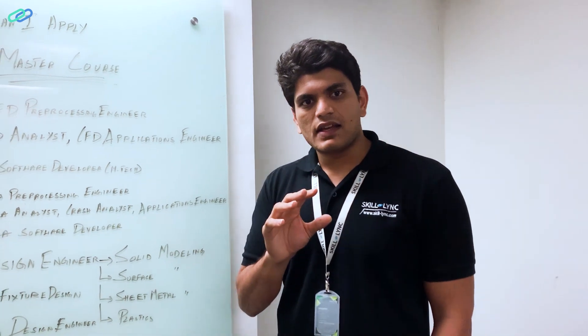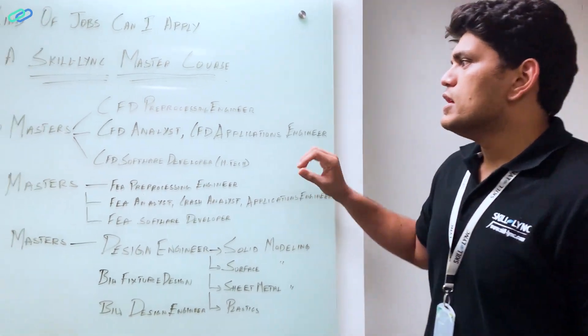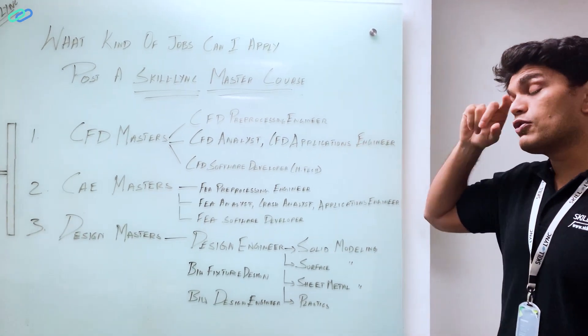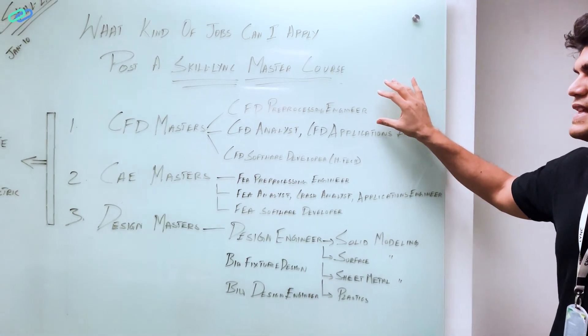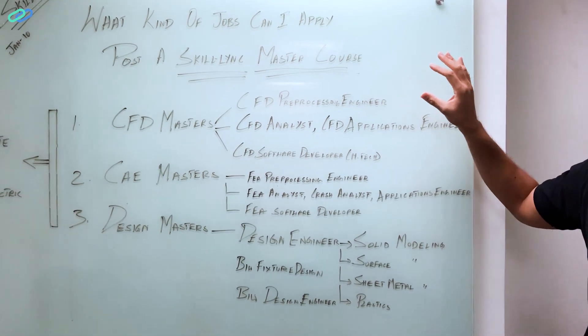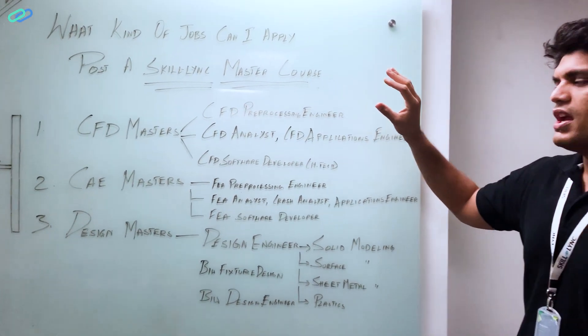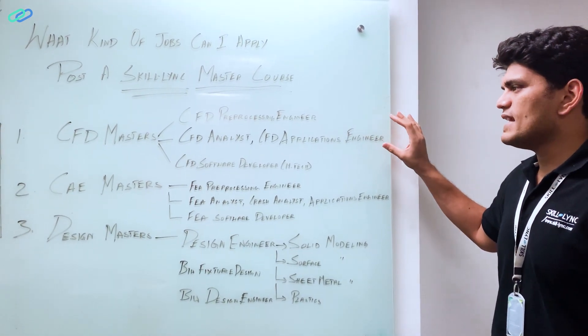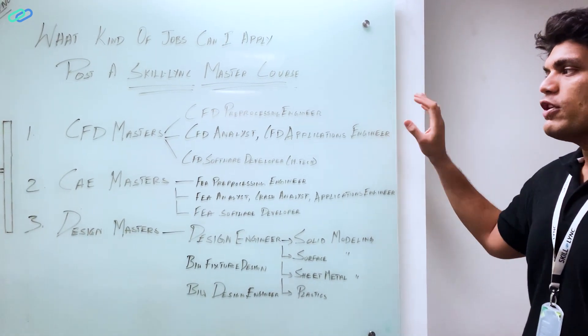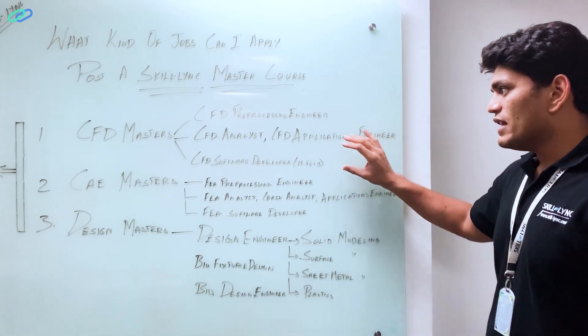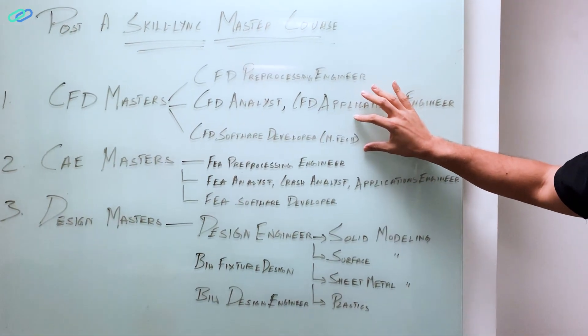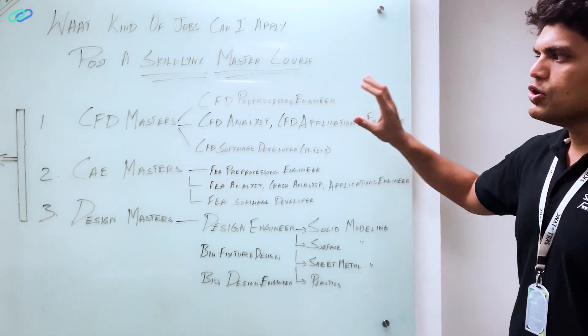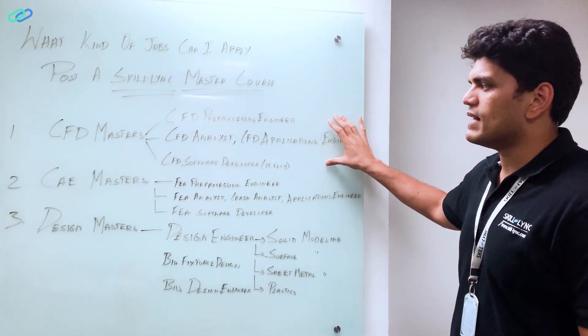So now what kind of jobs do students get after finishing our course? If you take any master course with computational fluid dynamics, if you are good at tools like ANSA or HYPERMESH, you can get into a CFD pre-processing engineer role. So here what you will do is basically work on meshing and setting up boundary conditions. If you are good at solver, you will get into CFD analyst or CFD applications engineer kind of role. If you are an M.Tech student and if you are good at coding, then you can apply for CFD software development roles. So these are the top-notch roles with higher-paced salaries. These are the roles that usually people who finish any of our CFD masters course can get.